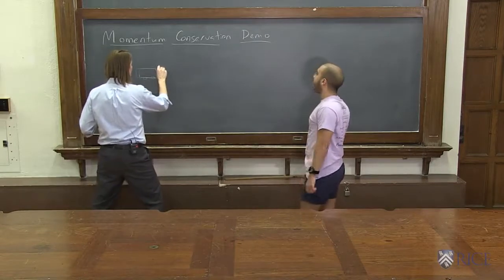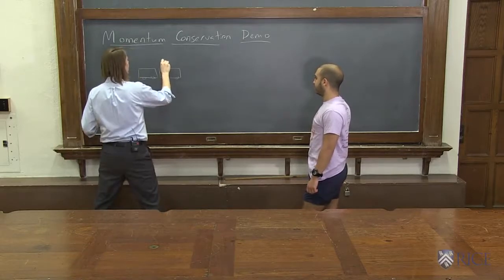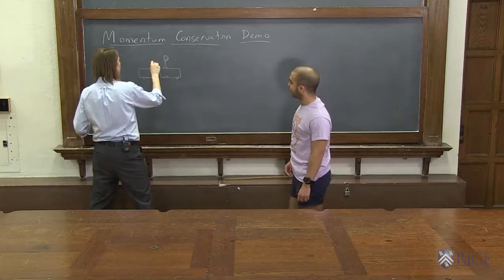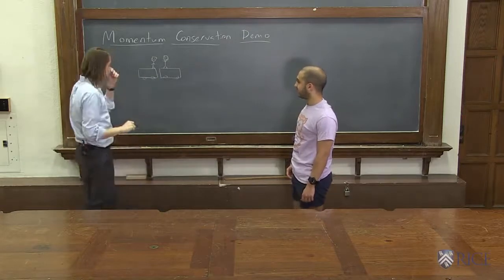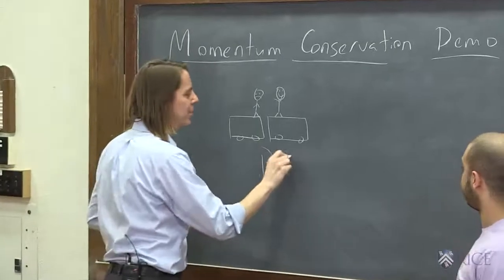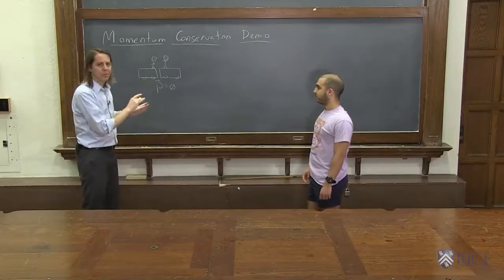So what we're going to do is we're going to be on our little carts here, and Sina will be here, all happy undergraduate, and I will be here. I've seen some stuff, you know, I've been through it. So neither one of us are going to be moving, zero velocity, so our momentum is zero. My momentum is zero, his momentum is zero, the total momentum is zero.